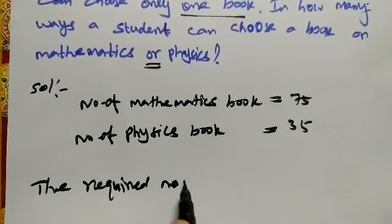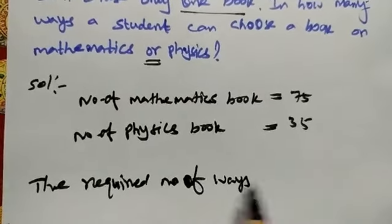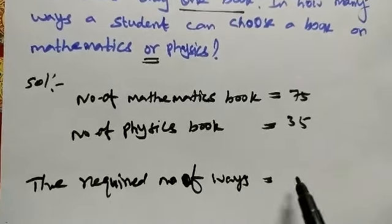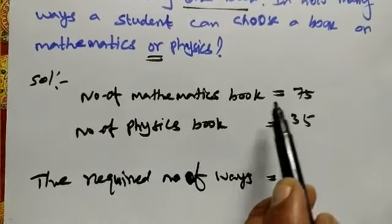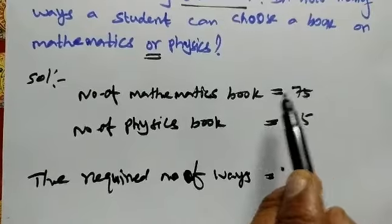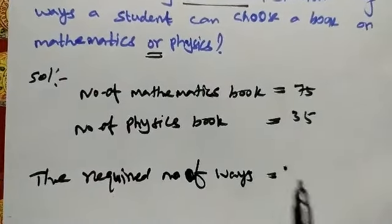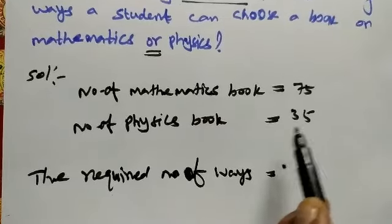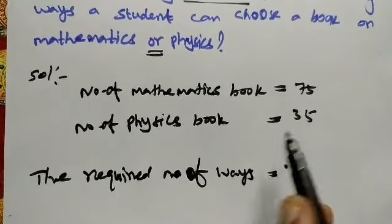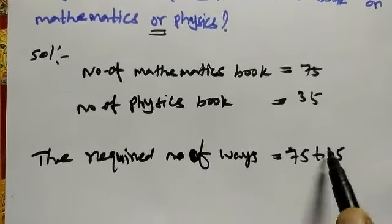Right here, number of ways equal to - so 75 math books can be chosen in 75 ways, 35 physics books selected in 35 ways. So this is sum rule, m plus n formula applies here. 75 plus 35